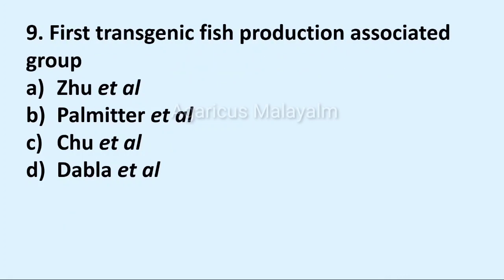Ninth question: First transgenic fish production associated group. Answer options: Option A Zoo et al, Option B Palmeter et al, Option C Chew et al, Option D Dabla et al. Correct answer: Option A Zoo et al.